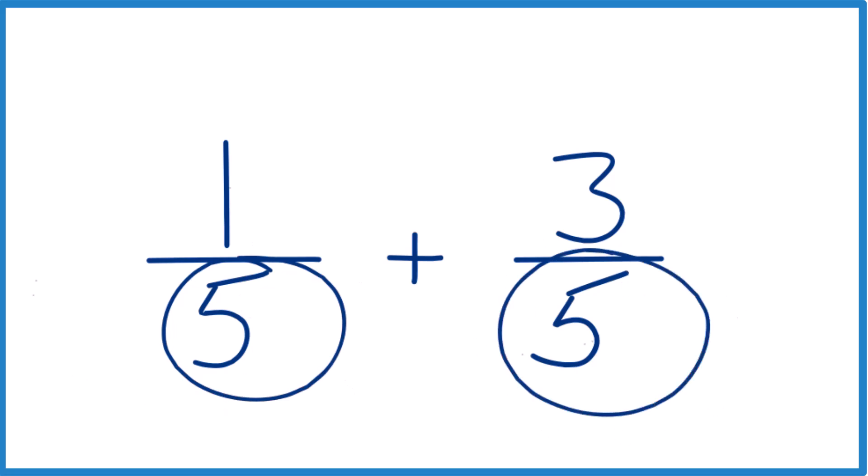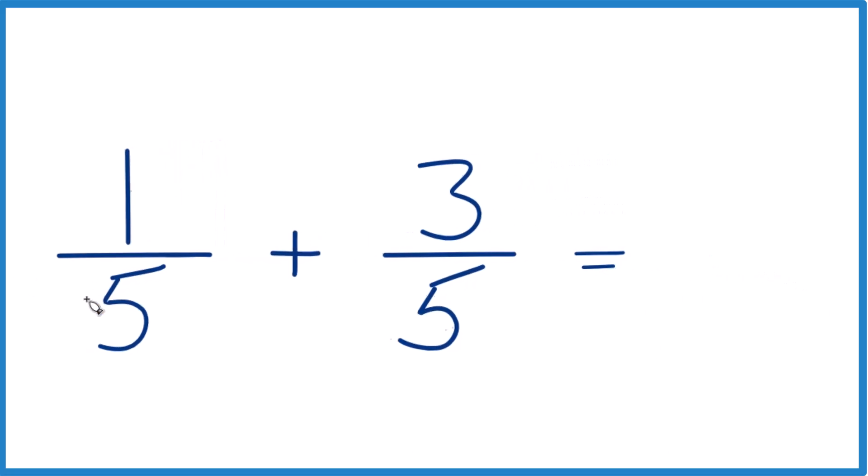And right here we have five, so we're good. That makes this kind of easy. Because when we add fractions with the same denominator, we just bring that across, and then we add the numerators. One plus three is four, so when we have one-fifth plus three-fifths, we get four-fifths.